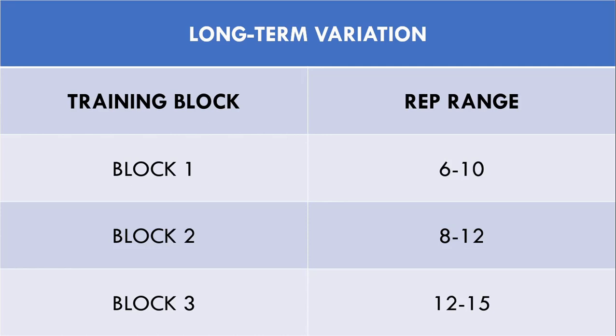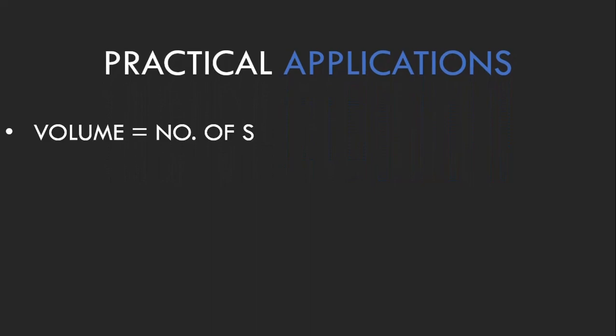So what does this practically mean for trainees seeking hypertrophy? The first point is that volume should be calculated via total number of sets for a given muscle group, rather than the classic sets times reps times load method. This is because hypertrophy can be achieved over a range of different rep ranges, and each hard set essentially achieves a similar adaptation.